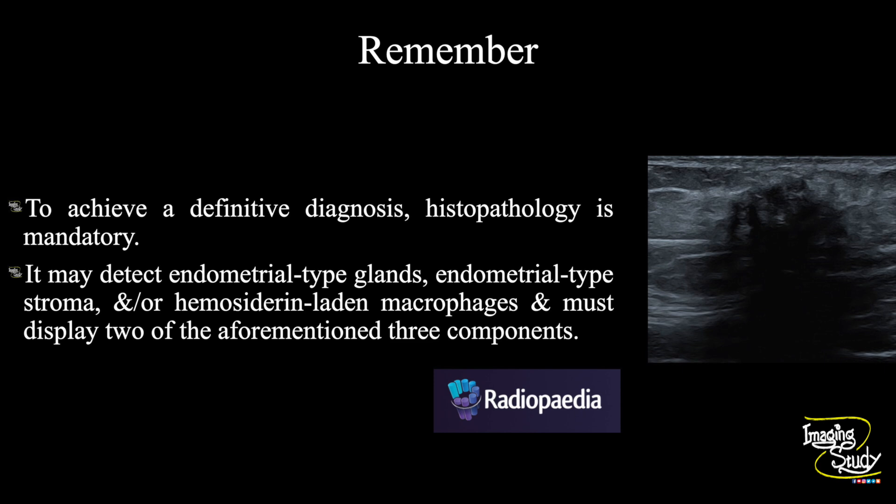Another take-home message: there will be many differentials like foreign body granuloma, herniation, and muscular tumors. So to achieve a definitive diagnosis, histopathology in this case is mandatory. On histopathology, you may see endometrial-type glands, endometrial-type stroma, and/or hemosiderin-laden macrophages. To diagnose it as endometriosis, any two of these three components should be present.